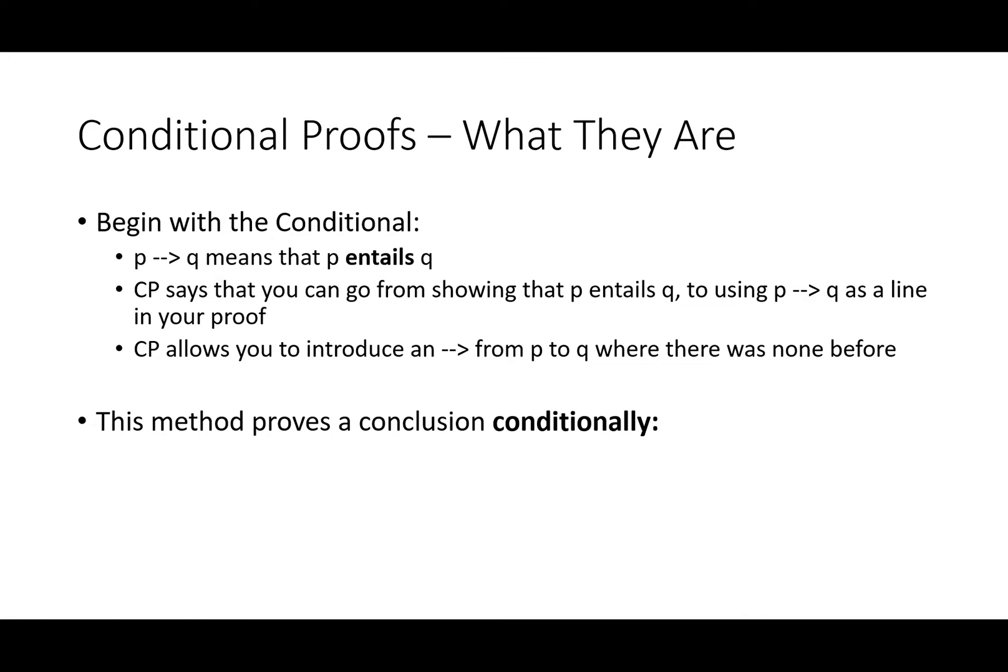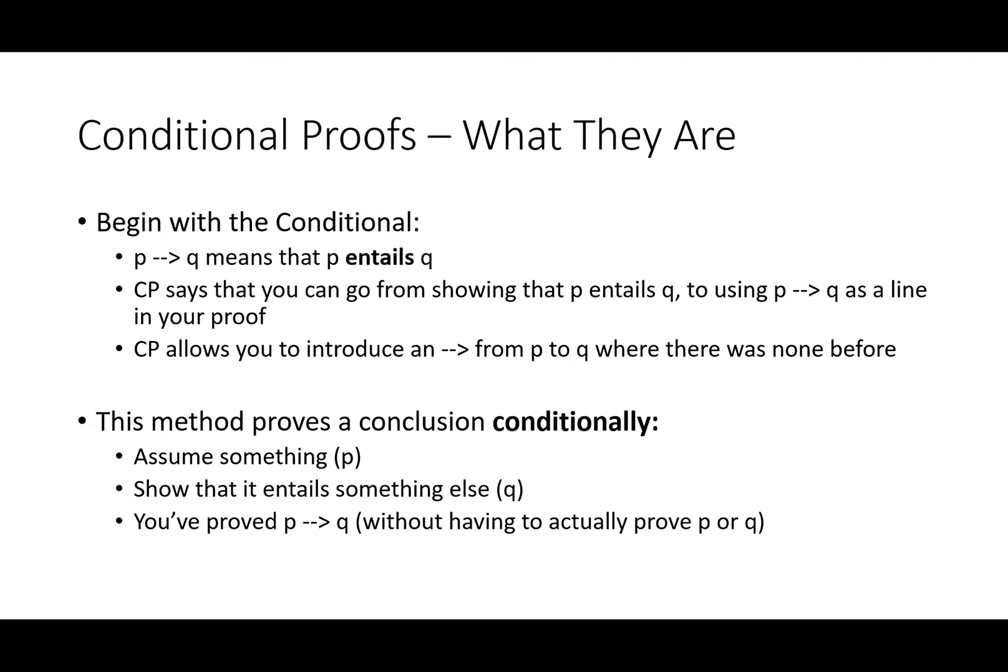This method proves a conclusion conditionally, unsurprising given the name. You assume anything, we'll say it's P, you show that it entails some other thing, Q, and you've proved if P then Q, without having to actually prove P or Q separately.